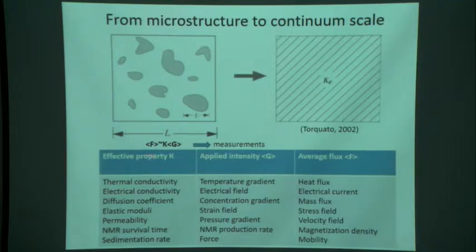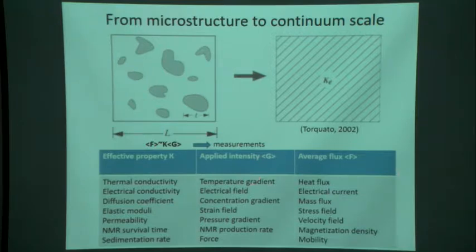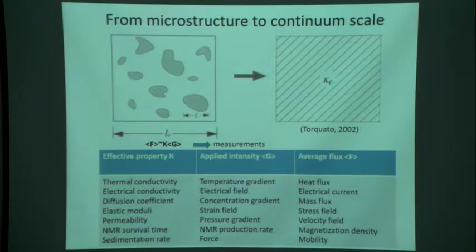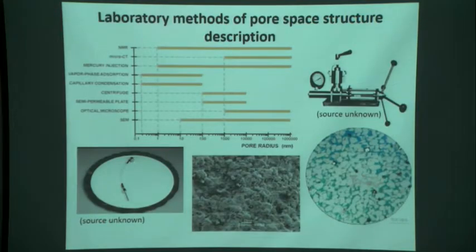The effective continuum media idea is that if you know the effective property and the average flux over the volume and the intensity or gradient, then you can compute the flow of thermal energy, electrical current, the diffusion rate, and many other things. In the case of permeability, you just compute the permeability.